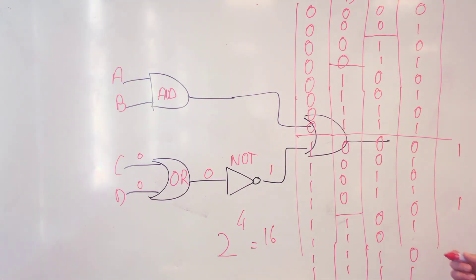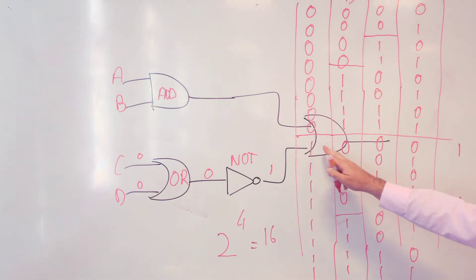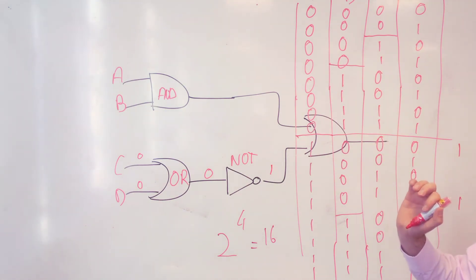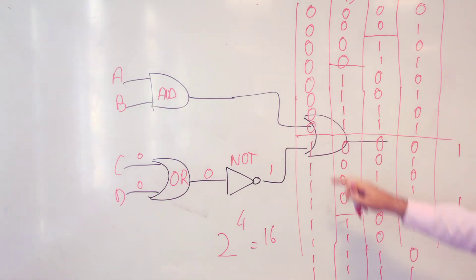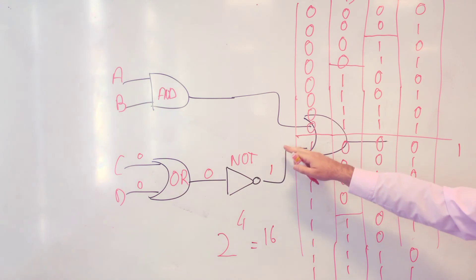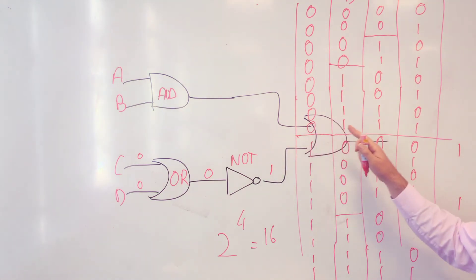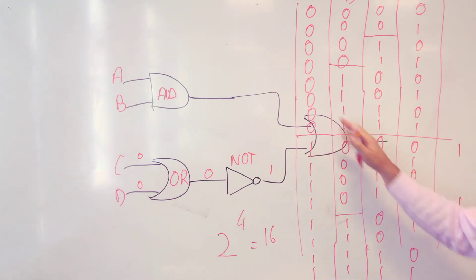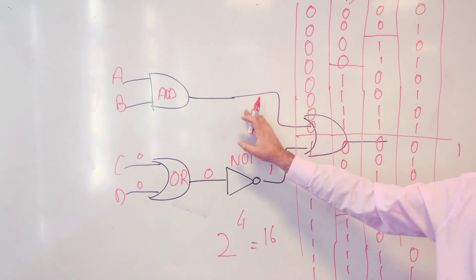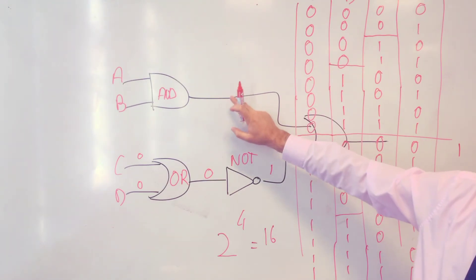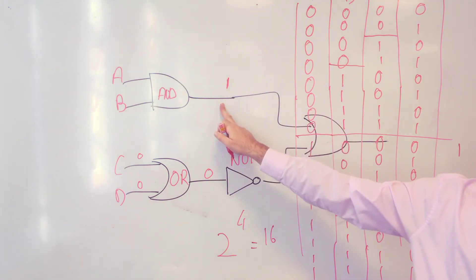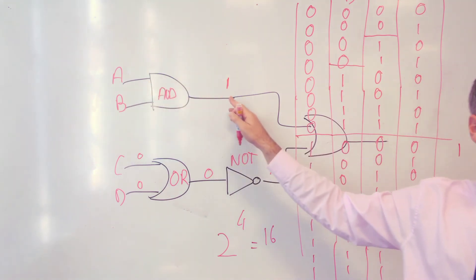This is an OR gate, so if I've got a one at any input I've got a one at the output. So if I've got a one here, I've got a one at the end no matter what A and B are. Now let's look at A and B — since this is an OR gate, I need this to be a one. What do I need A and B to be for this to be a one?